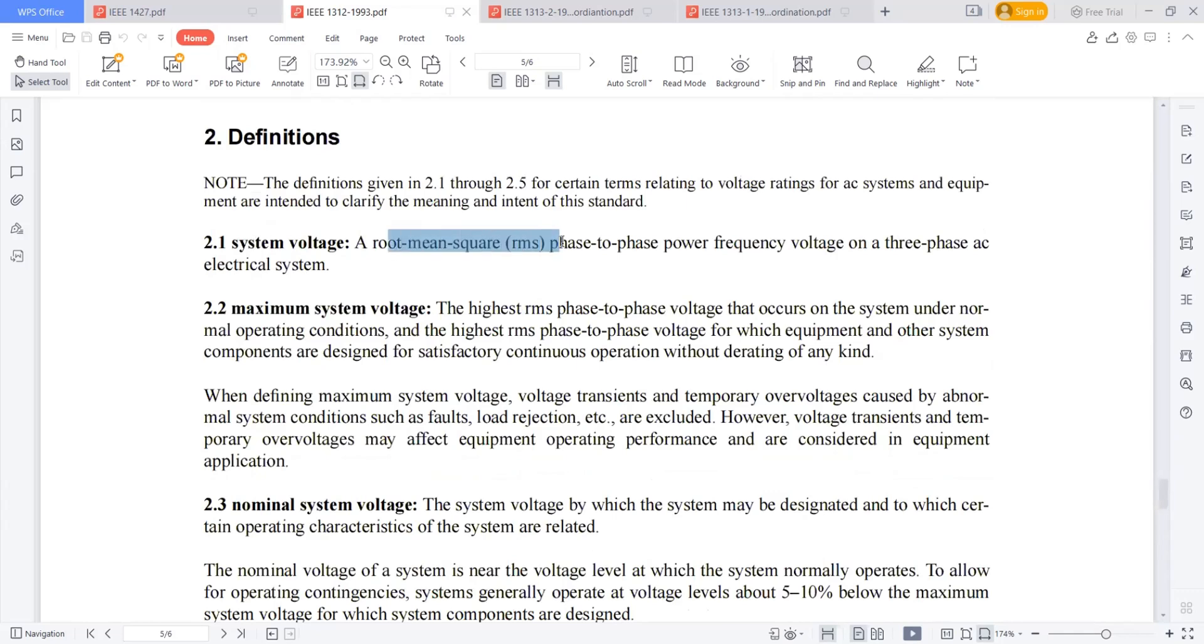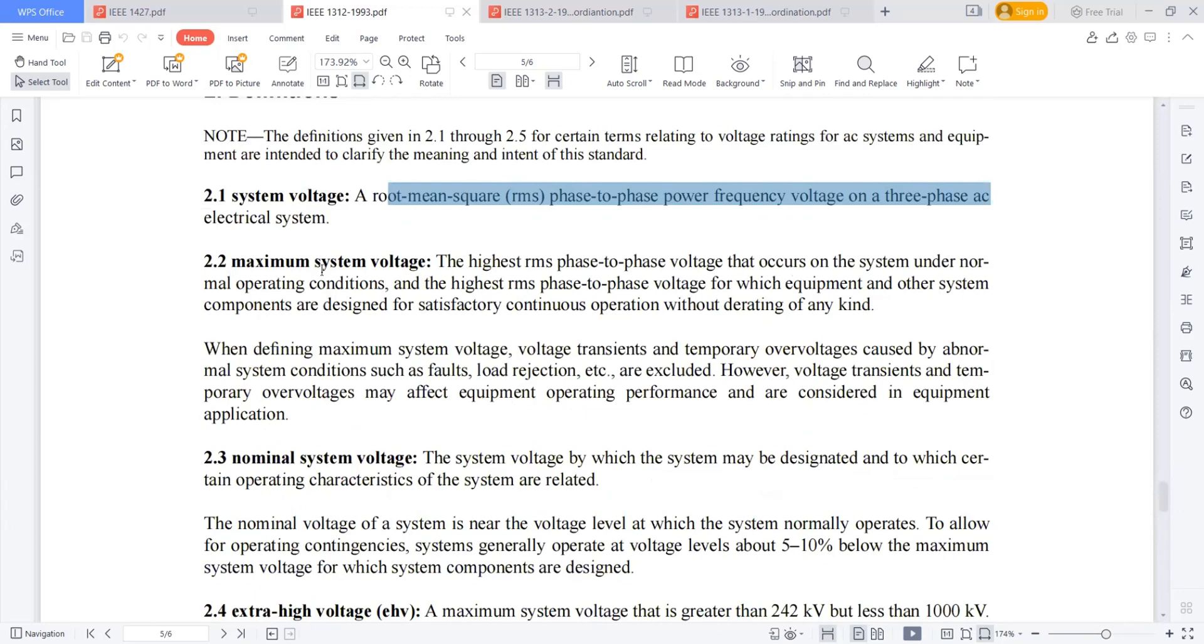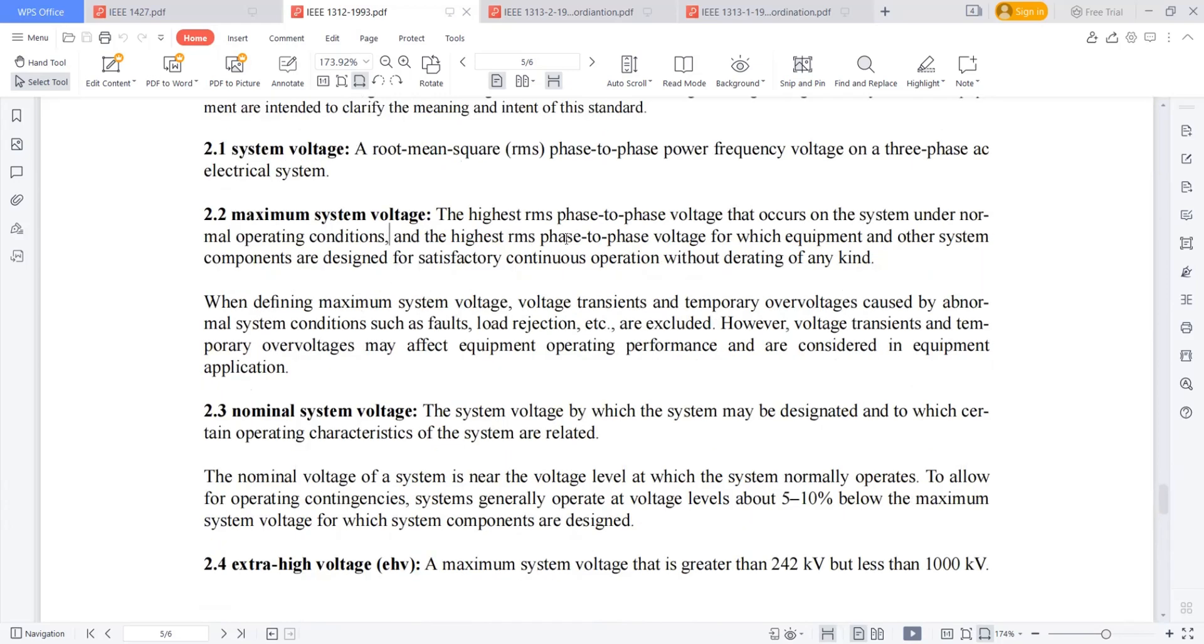The system voltage is the RMS phase-to-phase power frequency voltage on a three-phase AC network system. What is my maximum system voltage? The highest RMS phase-to-phase voltage that occurs on the system under normal operating condition, or the highest RMS phase-to-phase voltage for which equipment and other system components are designed for satisfactory continuous operation without derating of any kind.